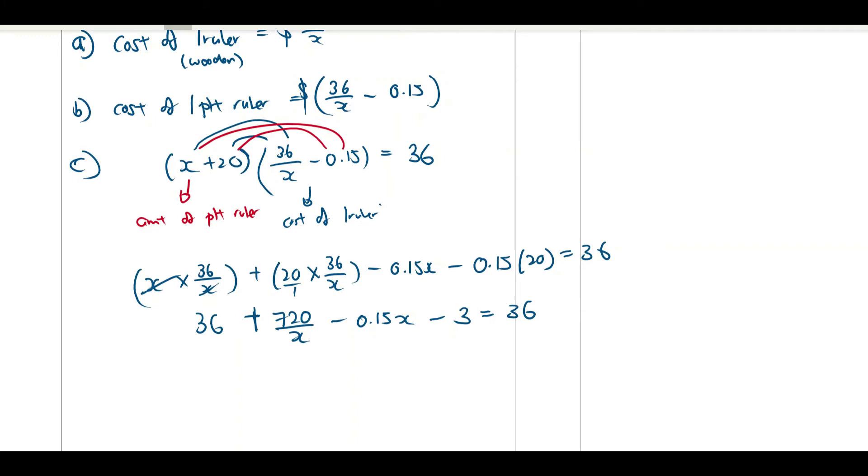Bring everything to one side, you will have 720 over X minus 0.15X minus 3 equals to 0. I want to remove this X as a denominator. So I need to multiply by X to everybody.